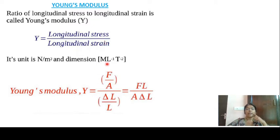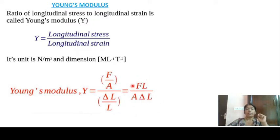The equation is: stress is F by A, and strain is δL by L. Young's modulus Y is equal to F·L divided by A·δL. This is an important equation — it is stress divided by strain, which is (F/A) divided by (δL/L), rearranged to give FL/AδL.